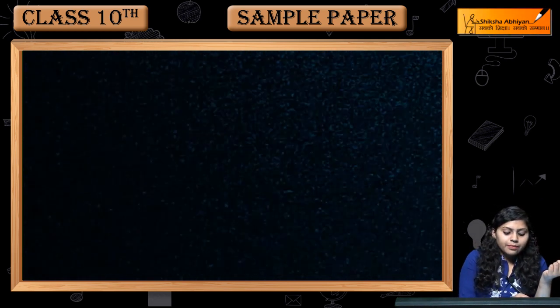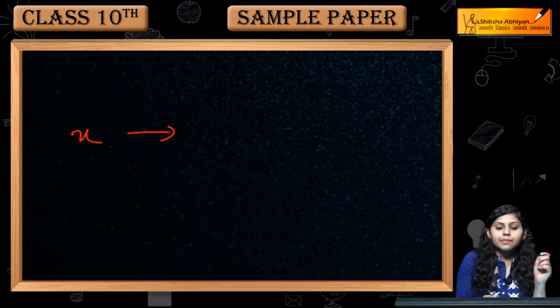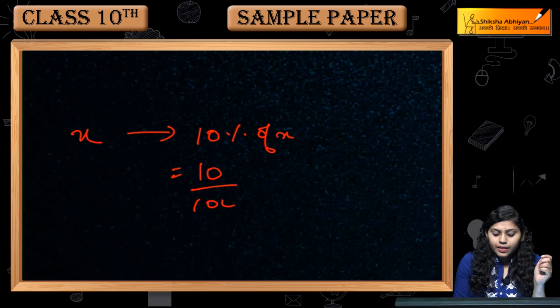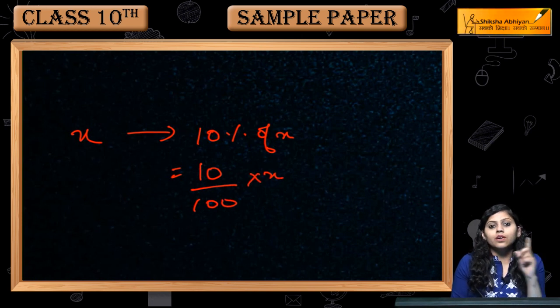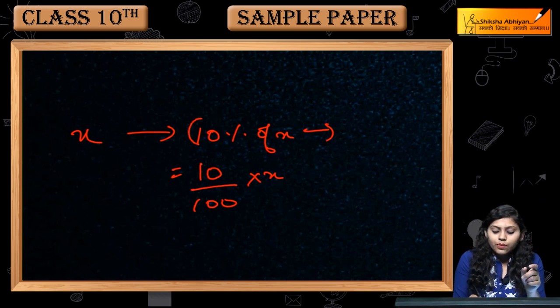Kya kiya humne? Plant X hai. Deer ke paas? 10% of X. Kitna hua? 10 over 100 into X. Lion ke paas kitni hai? 10% of 10% of X. This is Y.